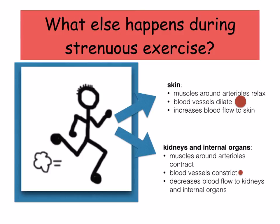The blood vessels in your skin dilate because the muscles around the arterioles relax, which increases the blood flow to the skin. For the kidneys and internal organs, the muscles around the arterioles contract, so the blood vessels constrict, and this decreases the blood flow to the kidneys and organs.